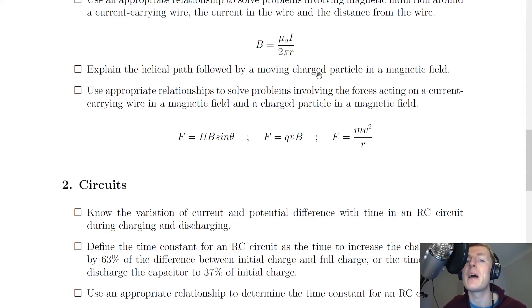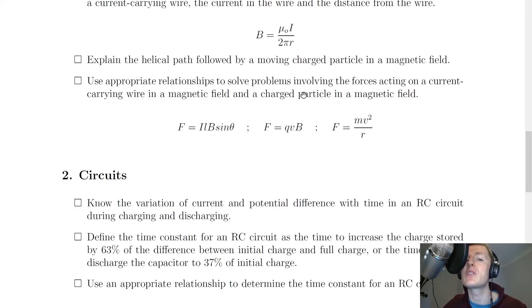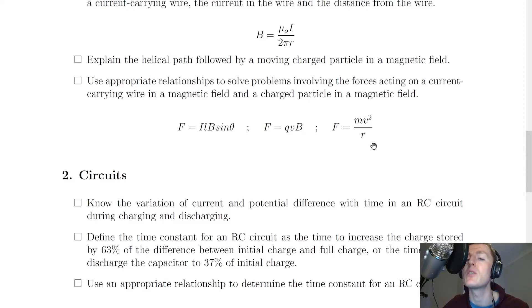You need to explain the helical path followed by a moving charged particle in a magnetic field. The component of the particle's velocity parallel to the magnetic field gives rise to the pitch of the helix, whereas the component perpendicular to the magnetic field gives the circular motion. Finally for fields, use appropriate relationships for forces on a current-carrying wire — F equals BIL sinθ — and on a charged particle — F equals QvB — along with centripetal force F equals mv squared over r. Equating the magnetic and centripetal force equations gives the radius of curvature, often seen in mass spectrometer questions.